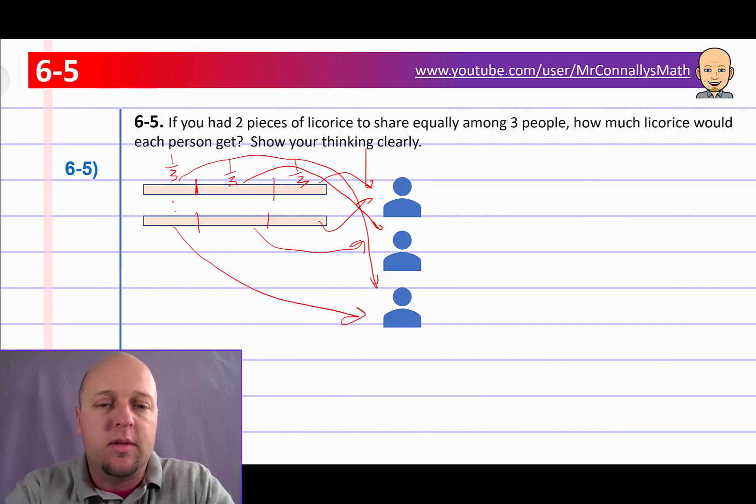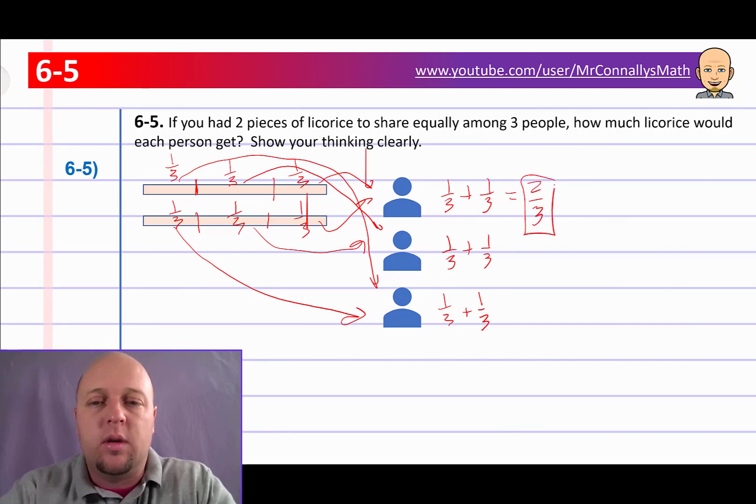And then give one to each person. And the last person, you get this piece. So we've got one-third, and one-third, and one-third. So each person gets one-third plus one-third. And you get one-third plus one-third, and you get one-third. Okay, so we add those all together, and we get what? We each get two-thirds. So each person is going to get two-thirds. All right, pause if you need more time. All right, let's move on.